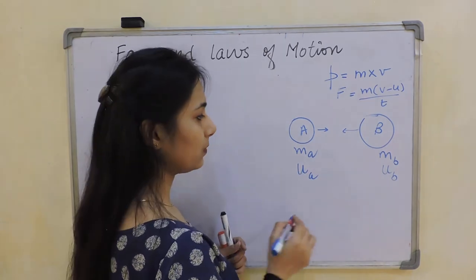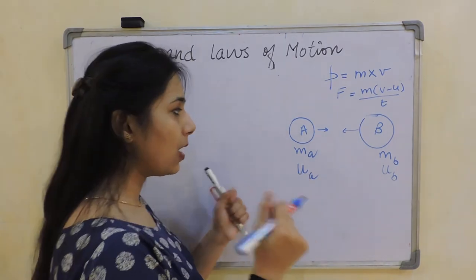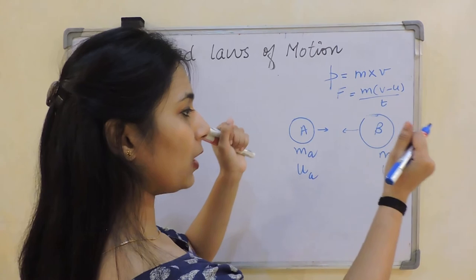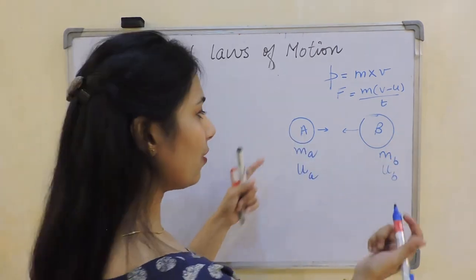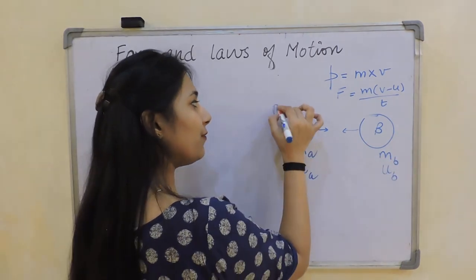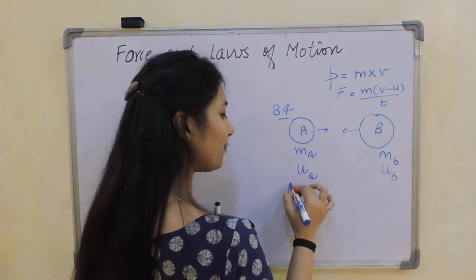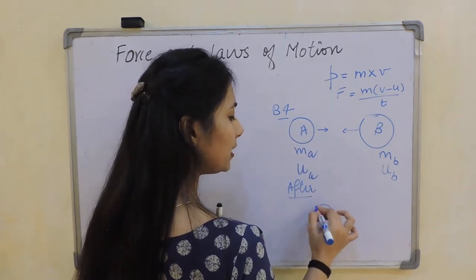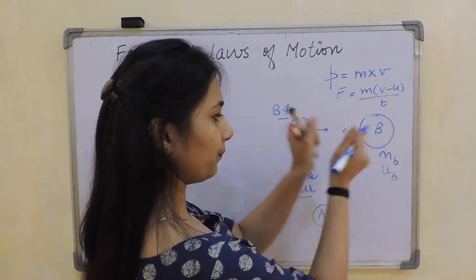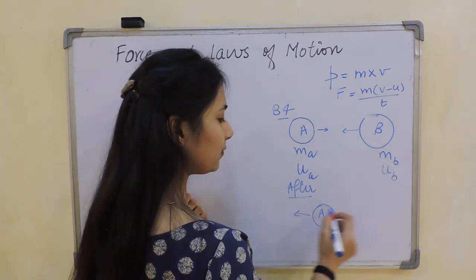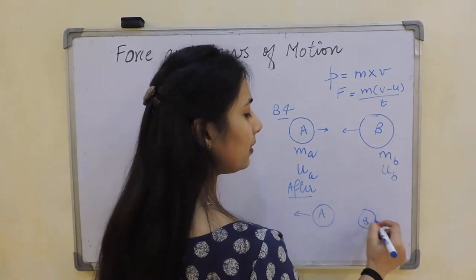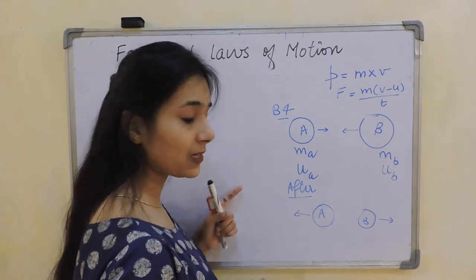Now after some time these two balls collide. They'll move apart. This is before collision, and then after collision what happens is that ball A moves here and ball B starts to move here.